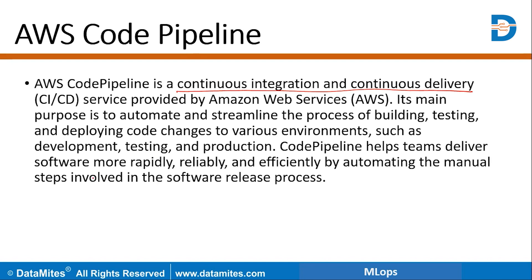So initially we have a version. First I'm going to use the code that is my version one. This code is going to be used for the initial deployment — that is the version one of the code.